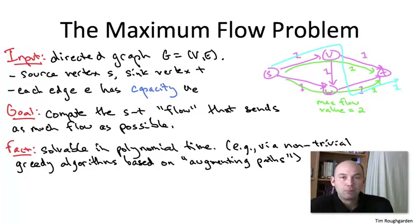But if you do that, you've now blocked up the other paths as well. The SVT path and the SWT path. There is no way to send further flow along any of those three paths. So this naive greedy algorithm only computed a flow of value one, whereas we know the max flow value is equal to two.